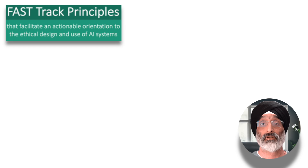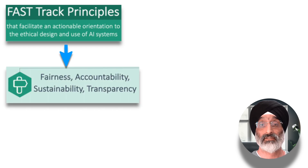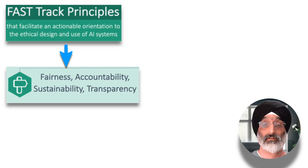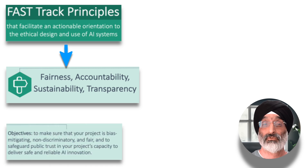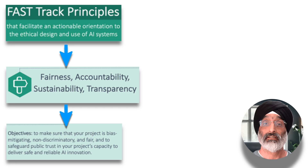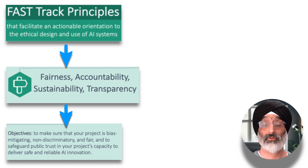The second block is more concrete. This level establishes an ethical platform for responsible AI project delivery through actionable principles geared towards guiding the design and use of AI systems. These principles are outlined as FAST-track principles and consist of four core notions: fairness, accountability, sustainability and transparency. They seek to provide moral and practical tools, serving two primary objectives: to ensure bias mitigation, non-discrimination and fairness within the project; and to uphold public trust in the capacity of a project to deliver safe and reliable AI innovation.